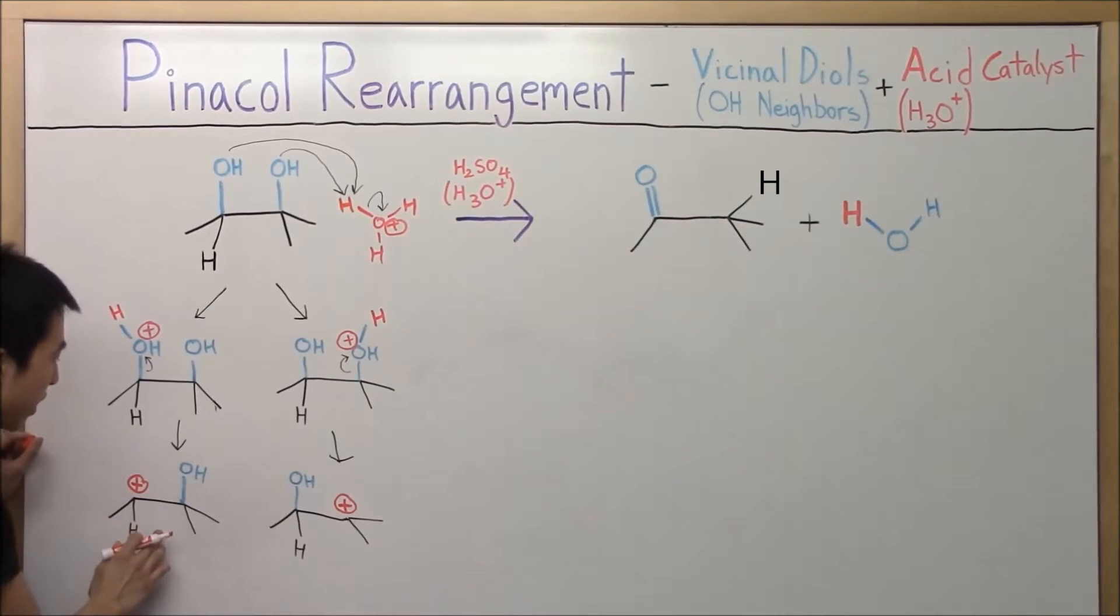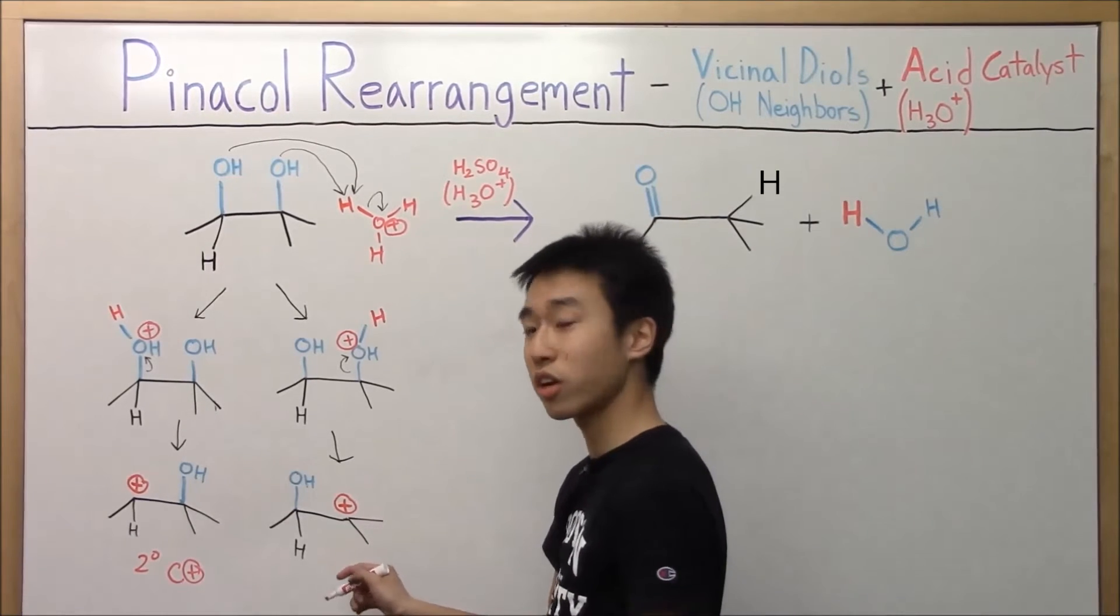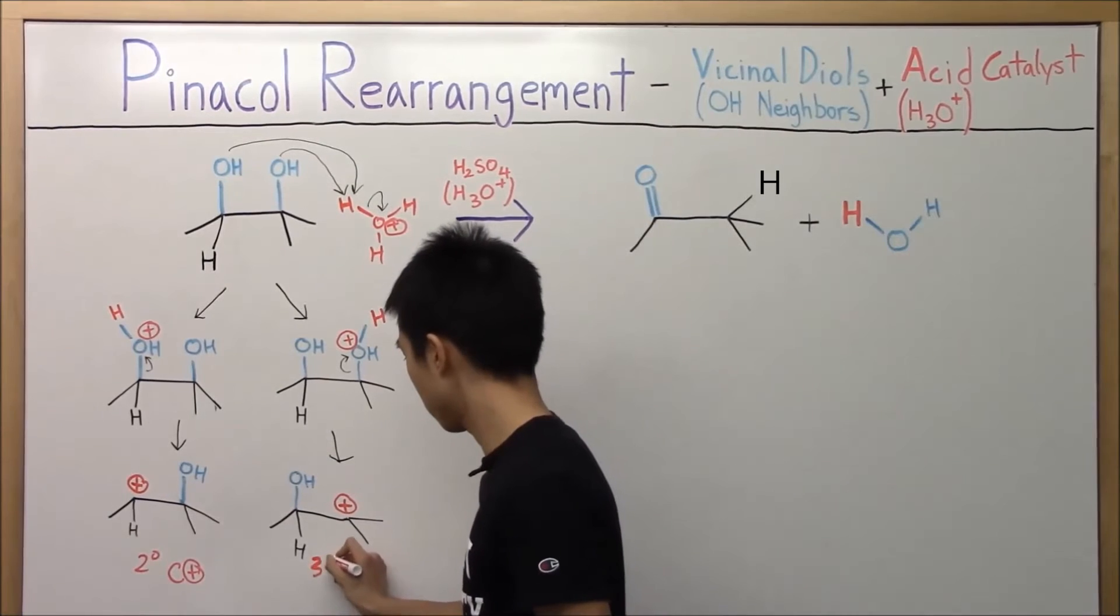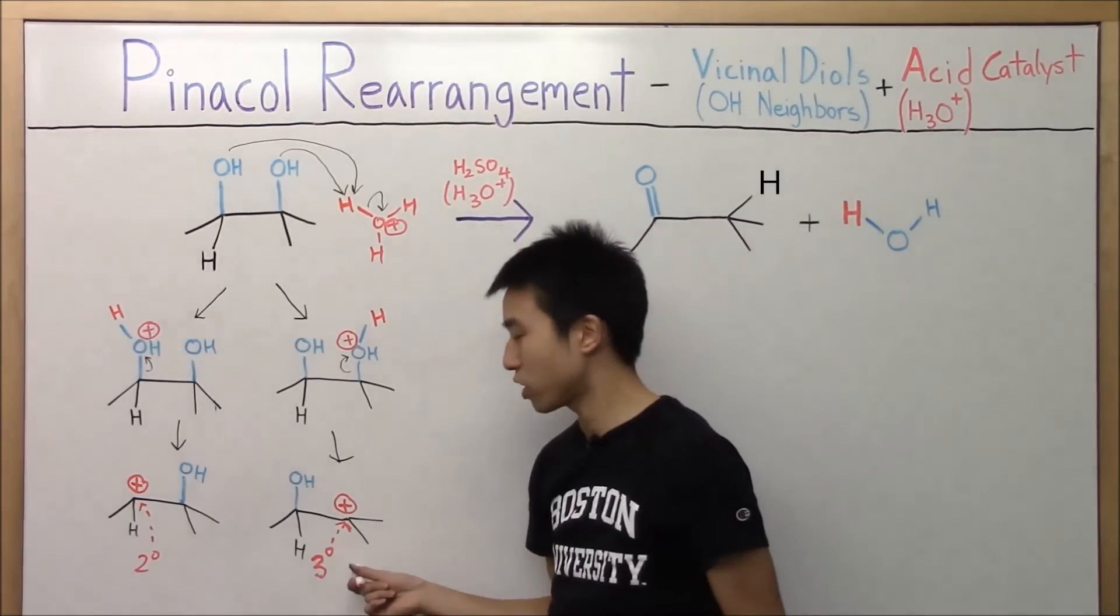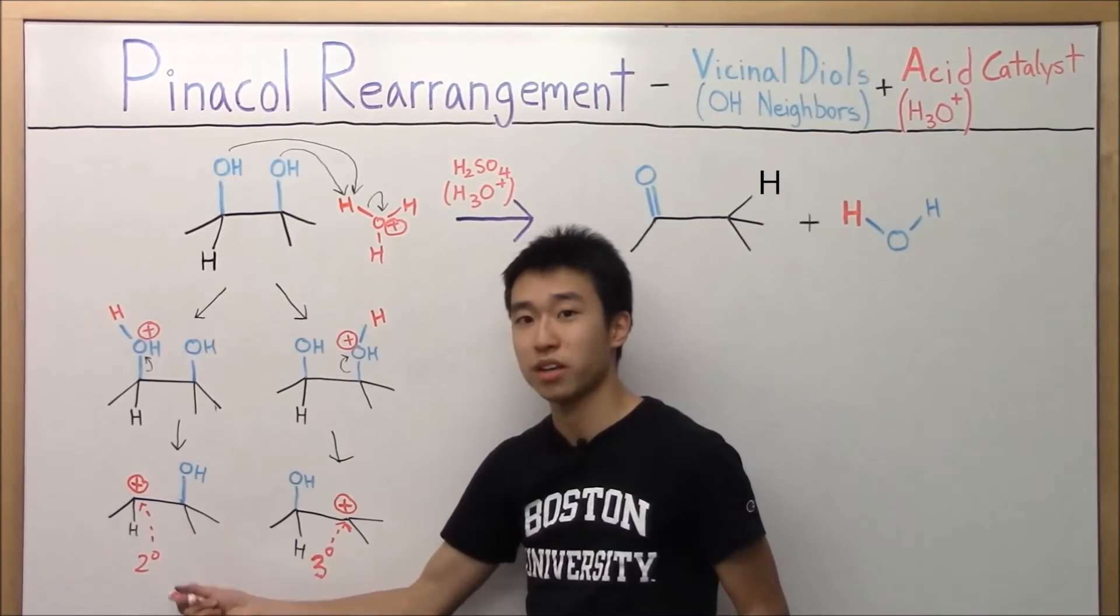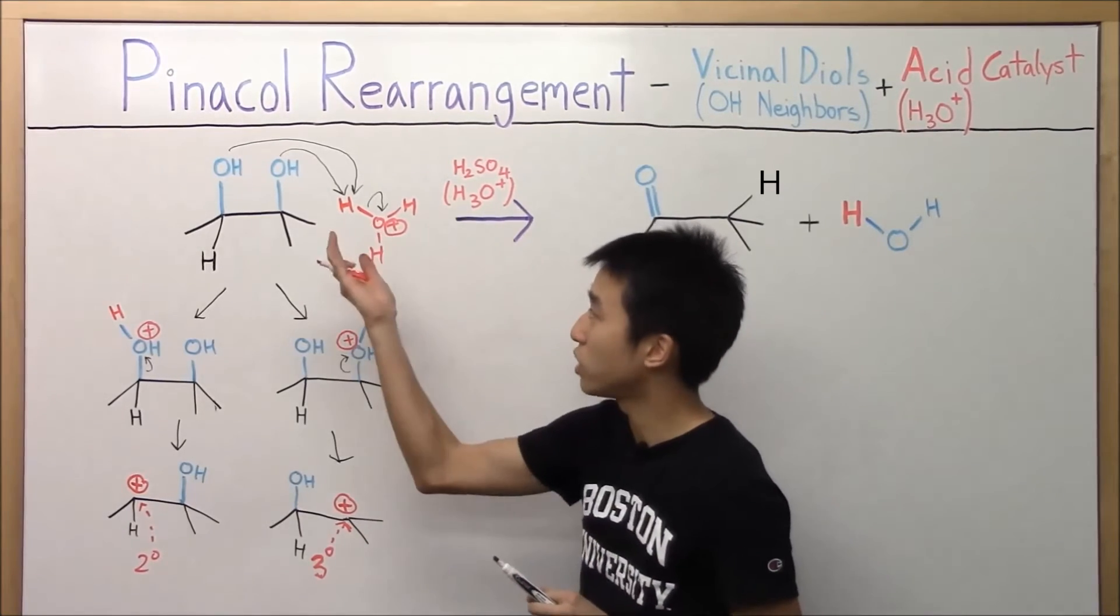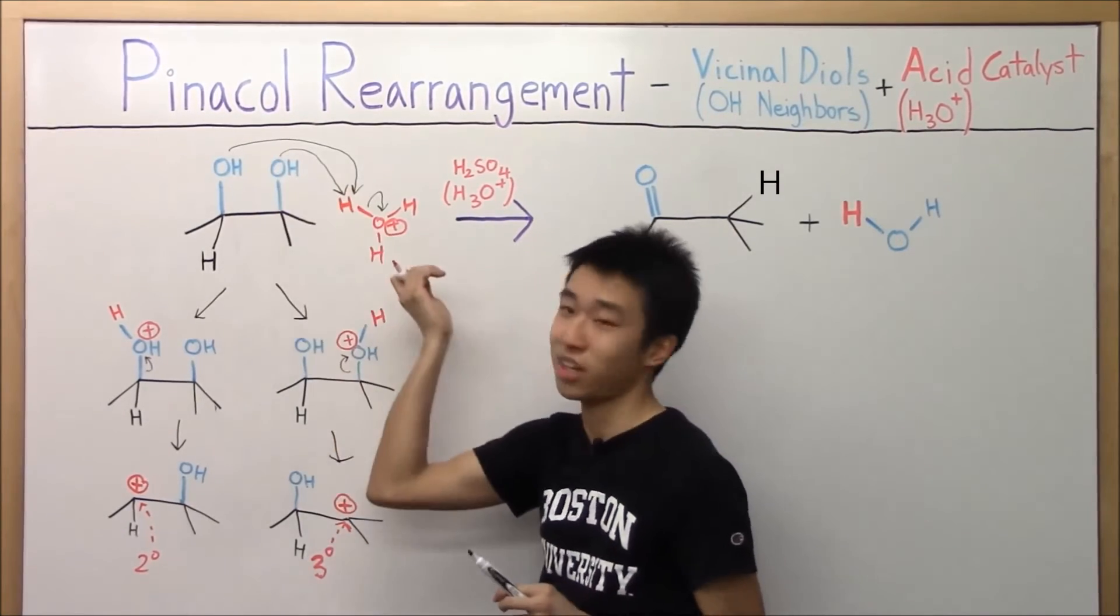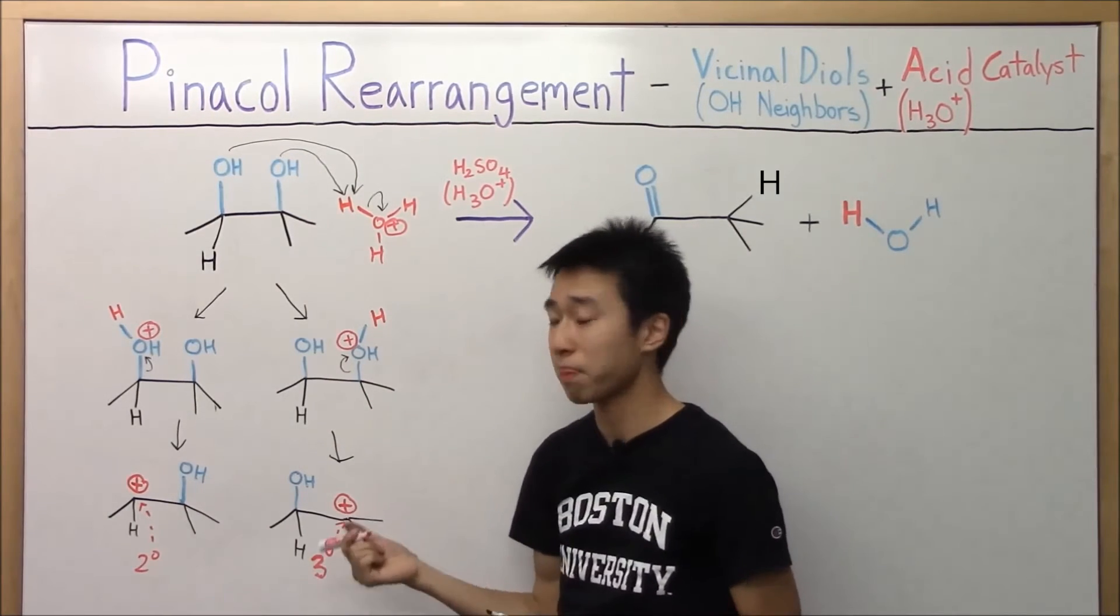Here, we have a secondary carbocation. So, secondary here. What kind of carbocation do we have? It's tertiary. Okay? Tertiary carbocation. Secondary carbocation. This is the key difference here. You only choose the OH. You choose the OH to get protonated so that when it leaves, you create the more stable carbocation. Why?